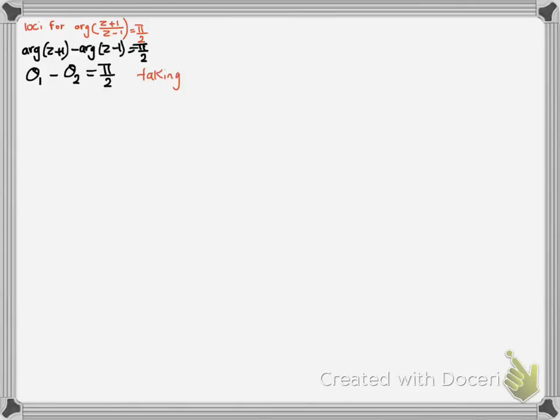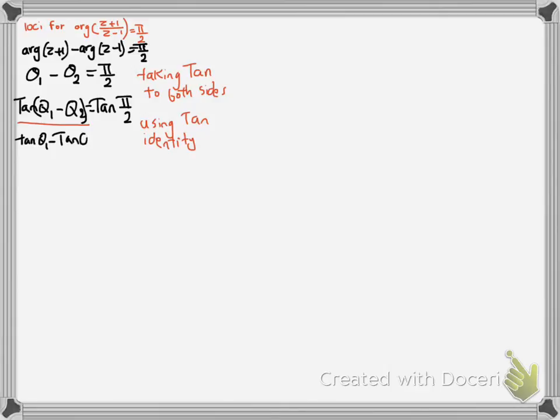Now we're going to take tan to both sides, that will help us to use the identities. So that gives me tan to the first side and tan for the second side. Now using the tan identities from the trig sections, we write it as tan theta one minus tan theta two over one minus tan theta one times tan theta two.